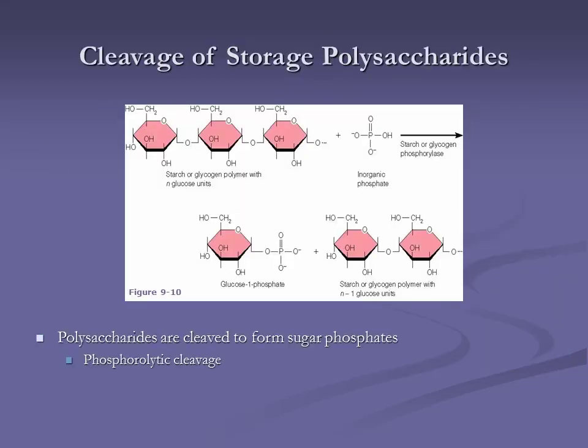Starch and glycogen are storage forms of glucose — starch for plants, glycogen for animals. We take our long chain of glucoses, process them, and pop off one molecule. Typically we liberate a glucose with a phosphate attached. What kind of reaction is it when we take a polymer and liberate a monomer? Hydrolysis — lysis to break. This is a detailed example of a hydrolysis reaction.